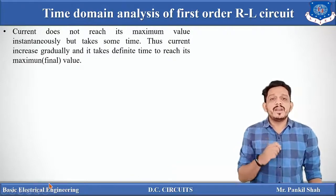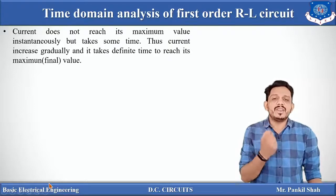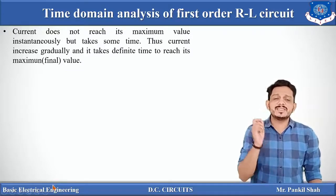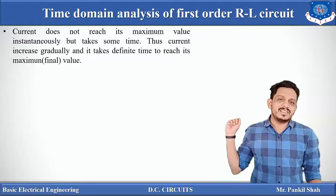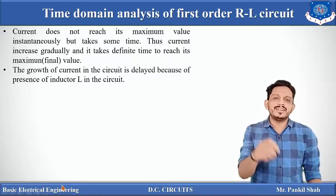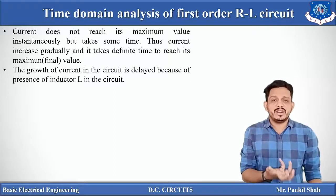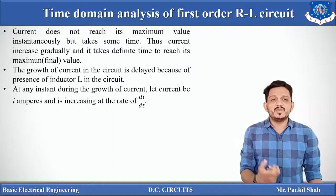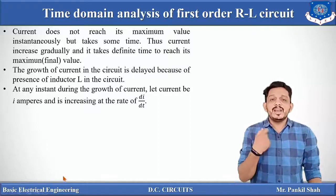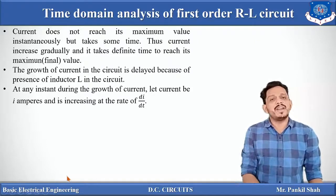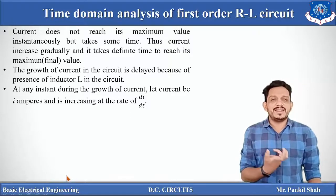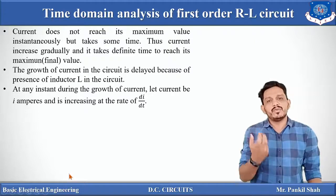Basically, current does not increase instantly whenever we connect any power supply to a circuit — it takes some time. Especially in the presence of an inductor, current cannot increase directly; it takes some time. So the growth of current is somewhat delayed. In this video we need to find the equation of current with respect to time, that is di/dt, so we can determine how much current has increased or decreased at any given instant.